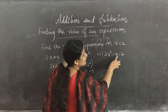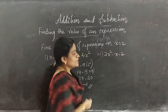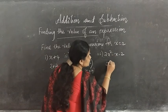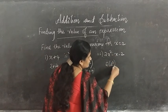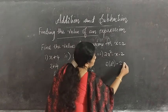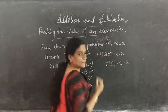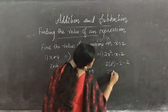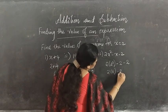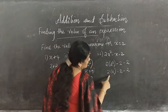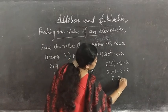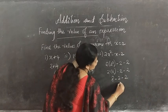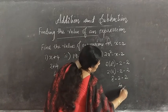Next expression: 2x² minus x minus 2. Substituting x equal to 2: 2 into 2² minus 2 minus 2. That is 2 into 4 minus 2 minus 2, which is 8 minus 2 minus 2. So 8 minus 2 is 6, and 6 minus 2 gives 4. The answer is 4.